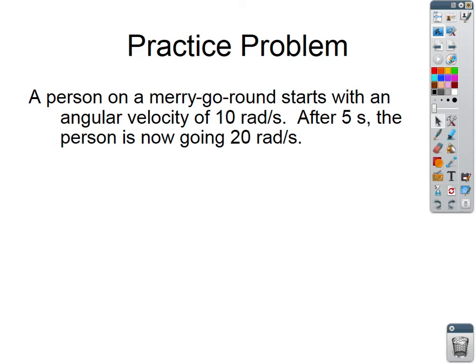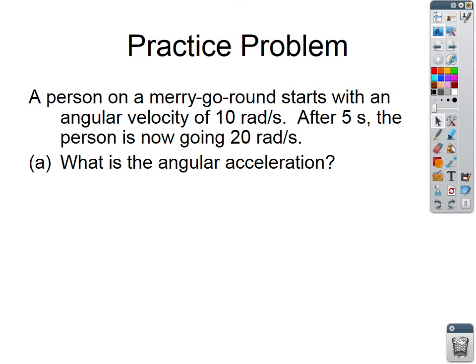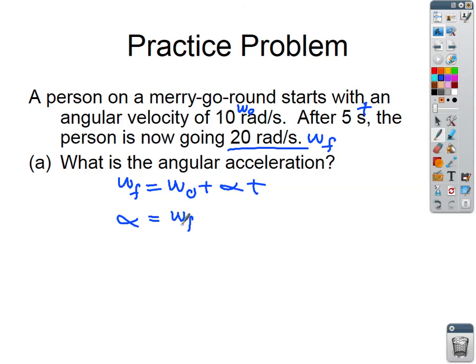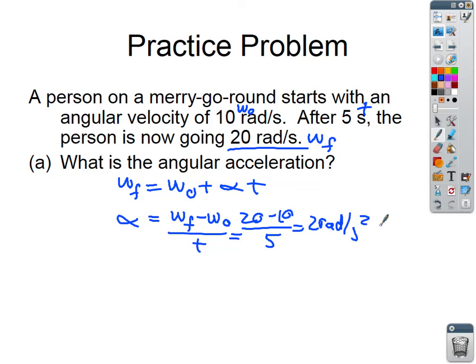Practice problem: a person on a merry-go-round starts with an angular velocity of 10 radians per second. After 5 seconds, the person is going 20 radians per second. What is the angular acceleration? Using final omega equals initial omega plus alpha times T, alpha equals (final minus initial) over time: (20 minus 10) divided by 5 equals 2 radians per second squared.